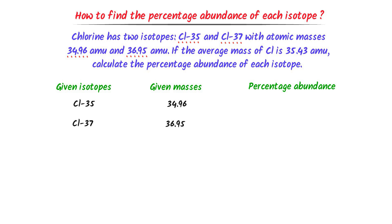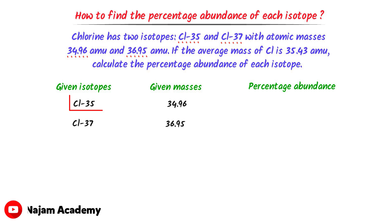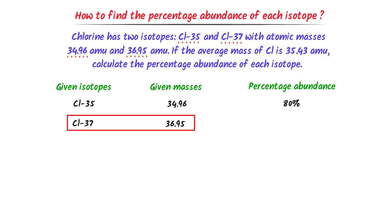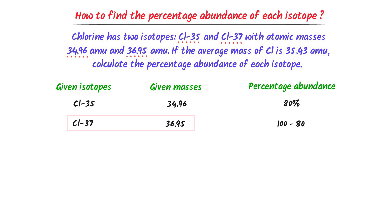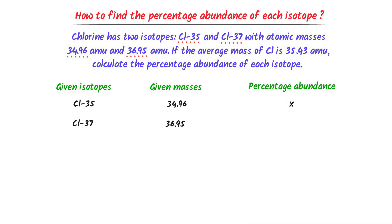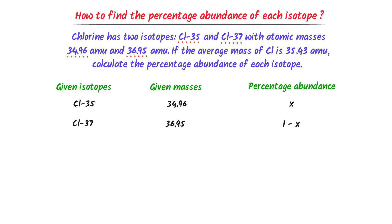I use this terminology. Let's consider that if the percentage abundance of Chlorine-35 is 80%, then the percentage abundance of Chlorine-37 is 100 minus 80%. Similarly, if the percentage abundance of Chlorine-35 is X, then the percentage abundance of Chlorine-37 is 1 minus X. Hence, we will calculate the value of X in order to find the percentage abundance of each isotope.